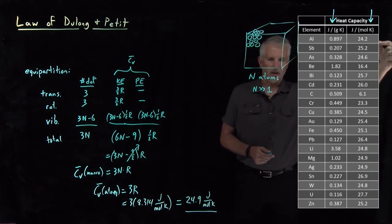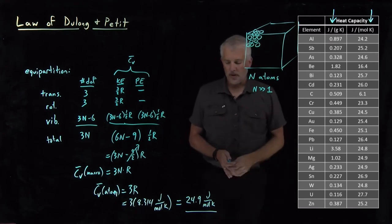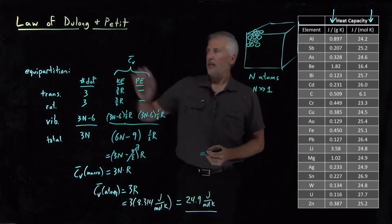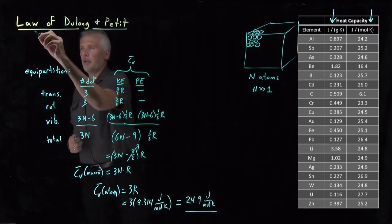So most of these values are 25 plus or minus 1, so pretty close to 24.9. So that is, in fact, this title statement, the law of Dulong and Petit.